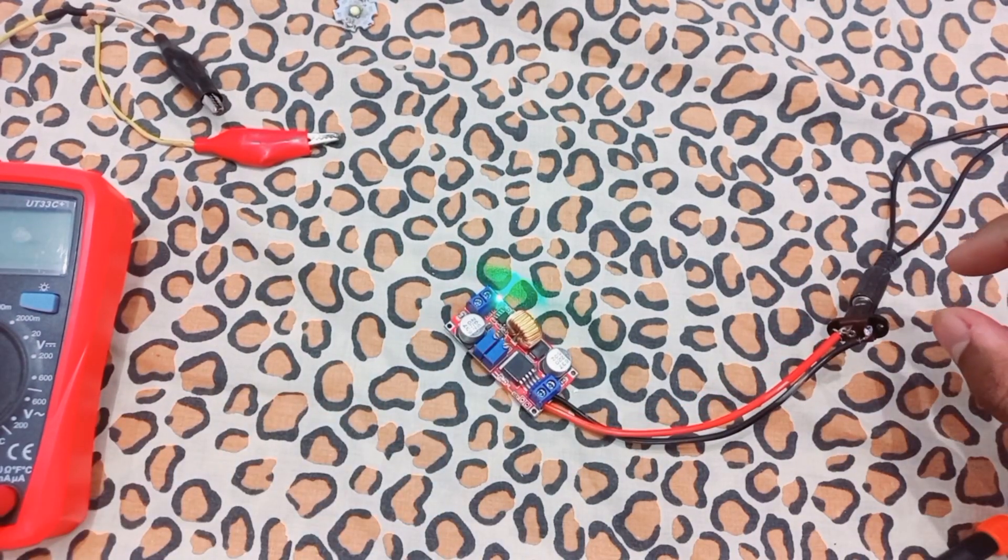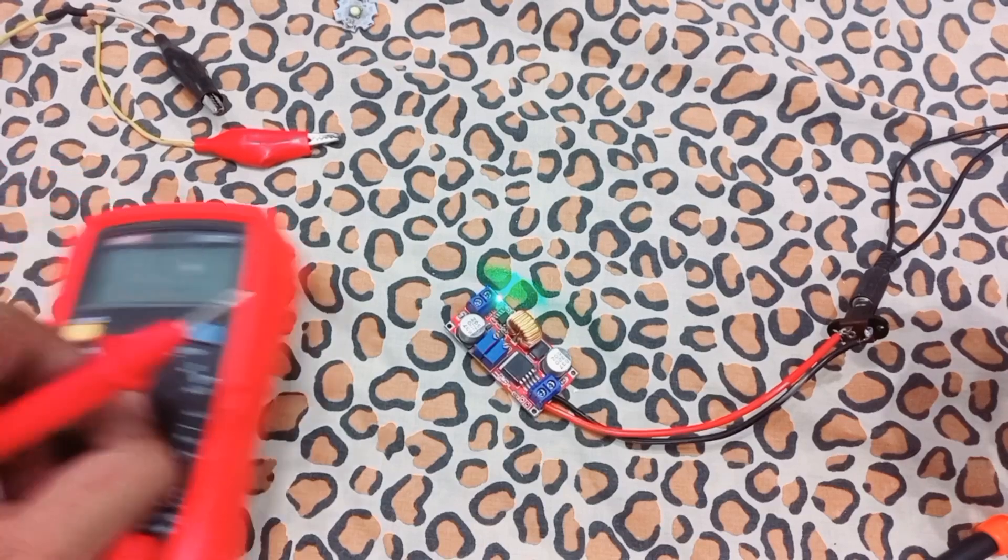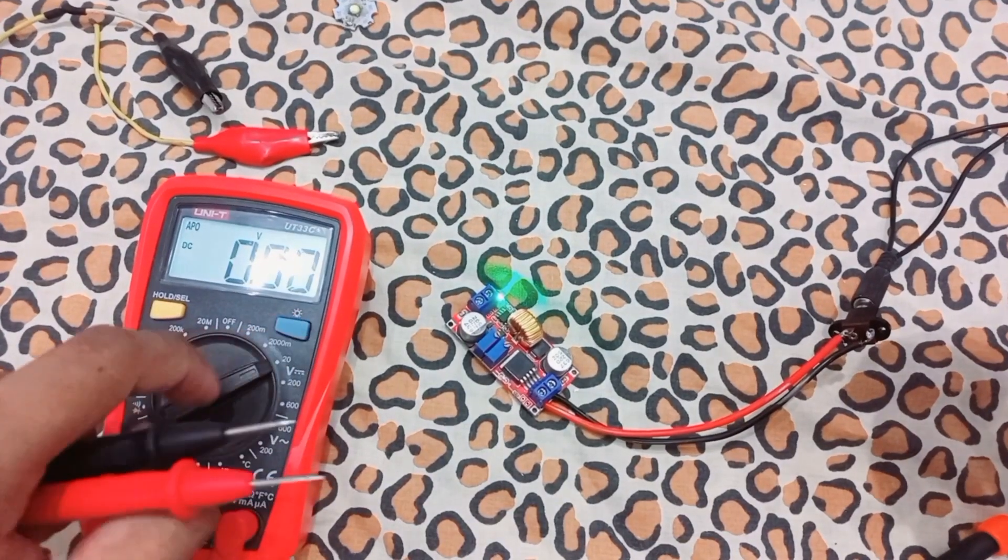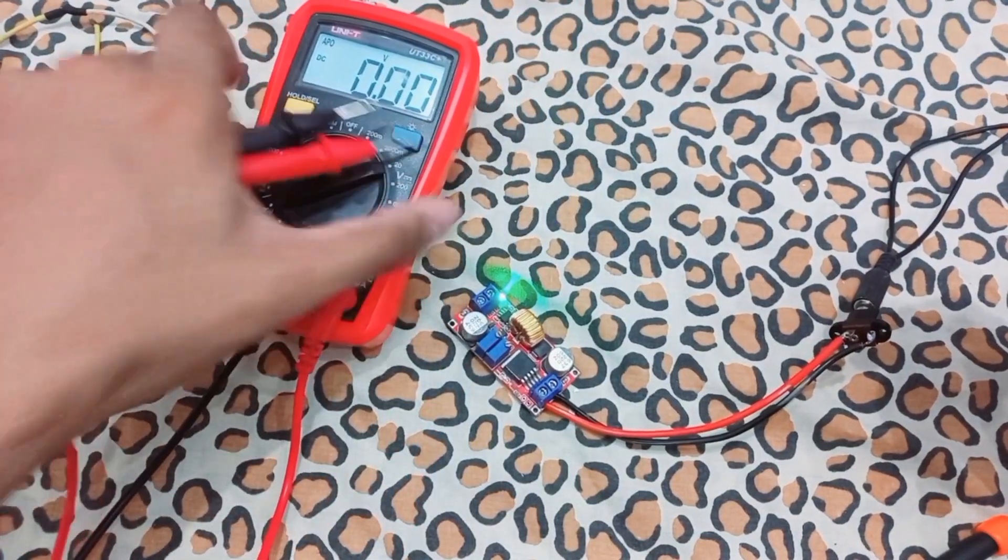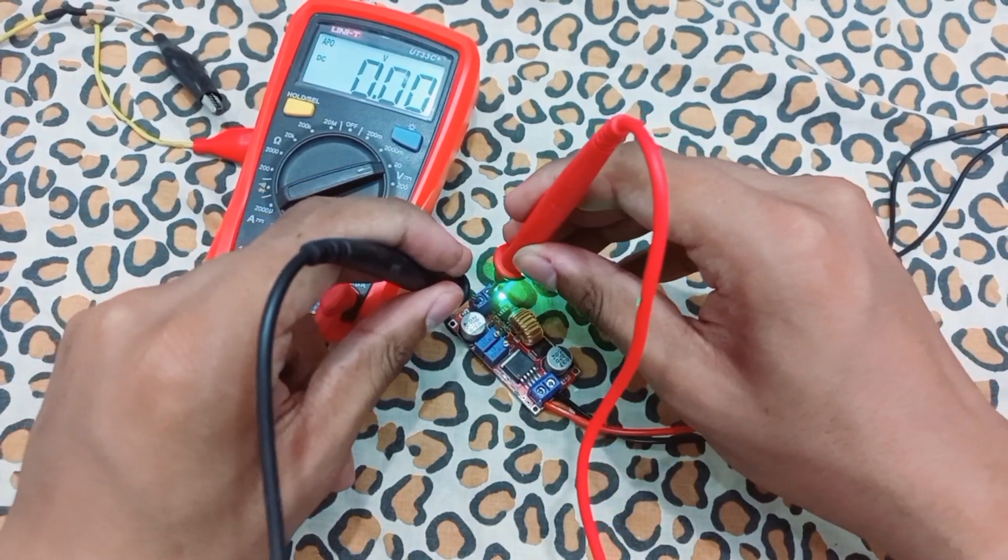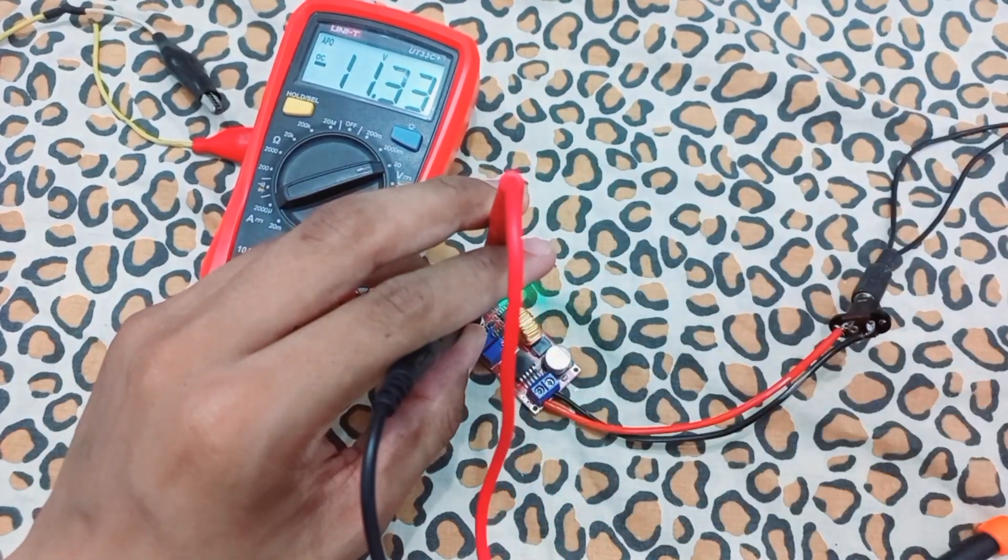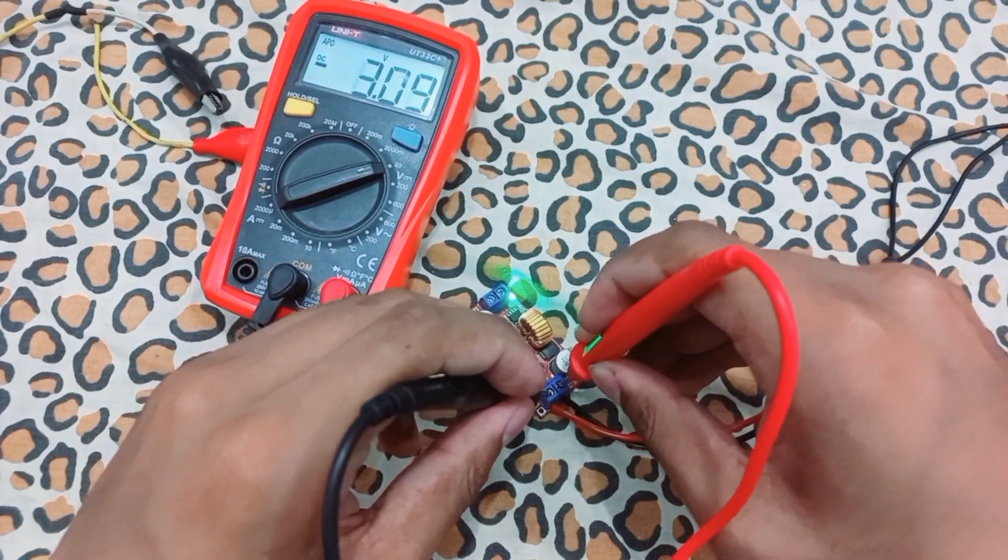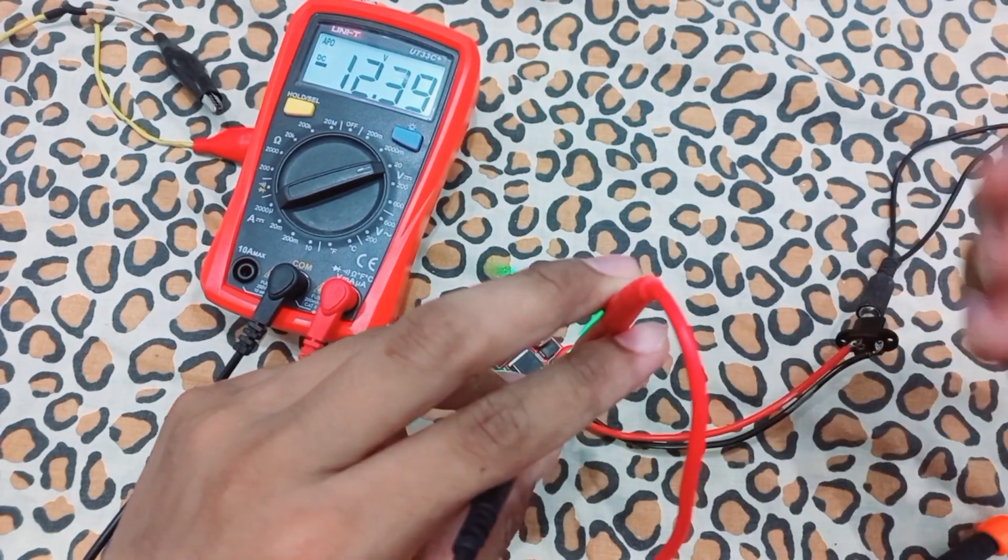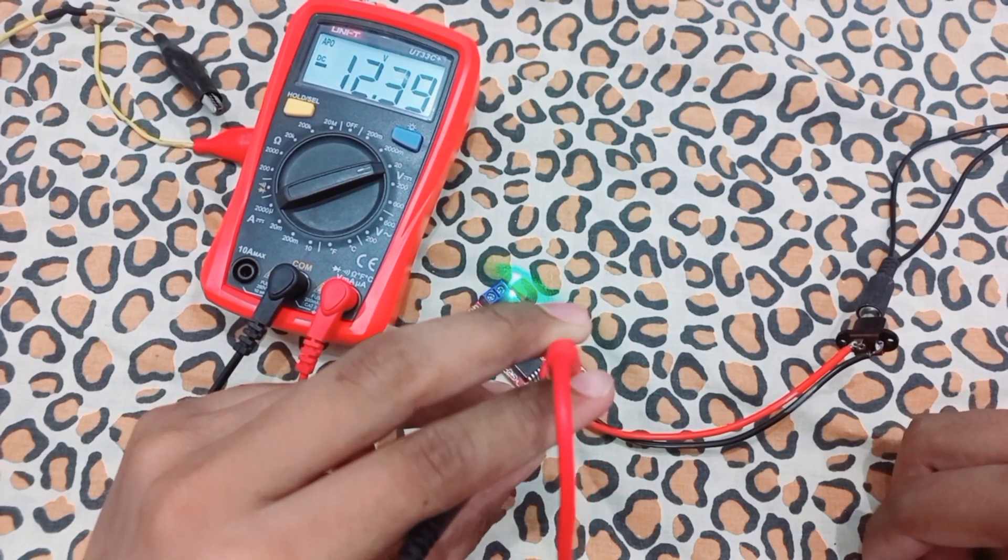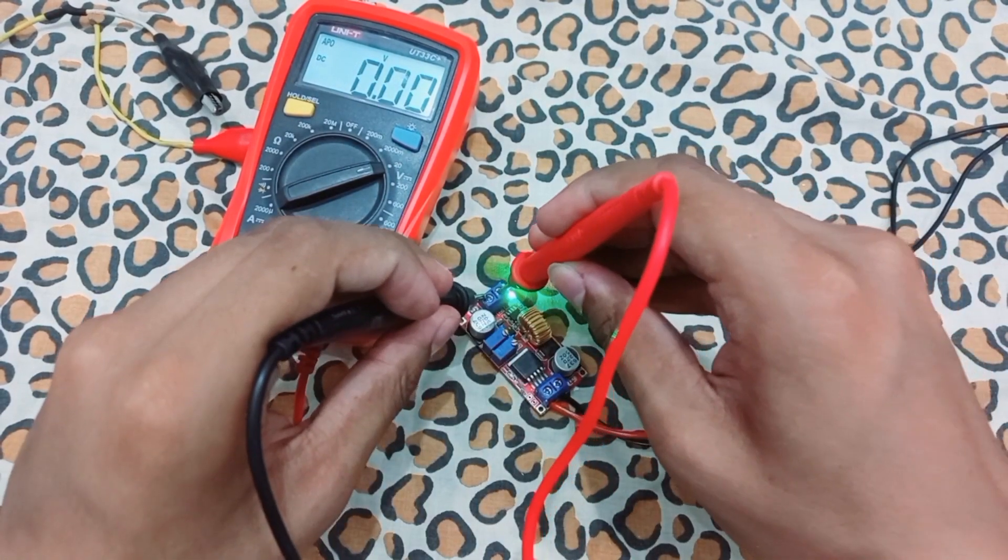Let's check the input voltage and output voltage. For this we need a multimeter set to 12 volt input. The input voltage is 12.39 volts and output voltage is 11.3 volts.